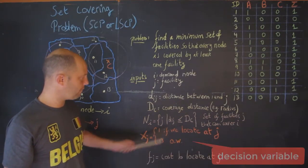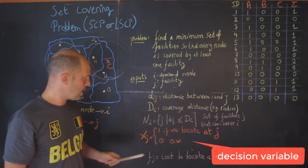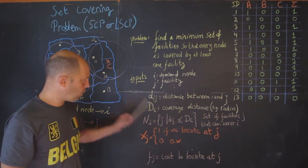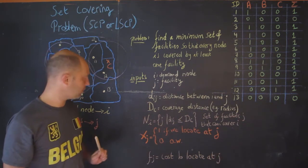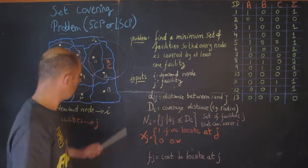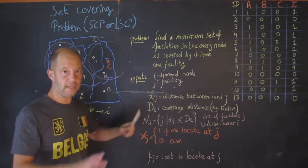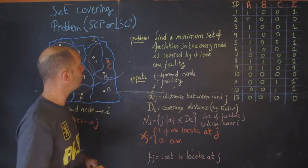x_j equals one if we decide to locate a facility at j, and zero otherwise. One parameter we can include would be f_j, which would be the cost associated with opening one of these facilities. That's the gist of the problem.